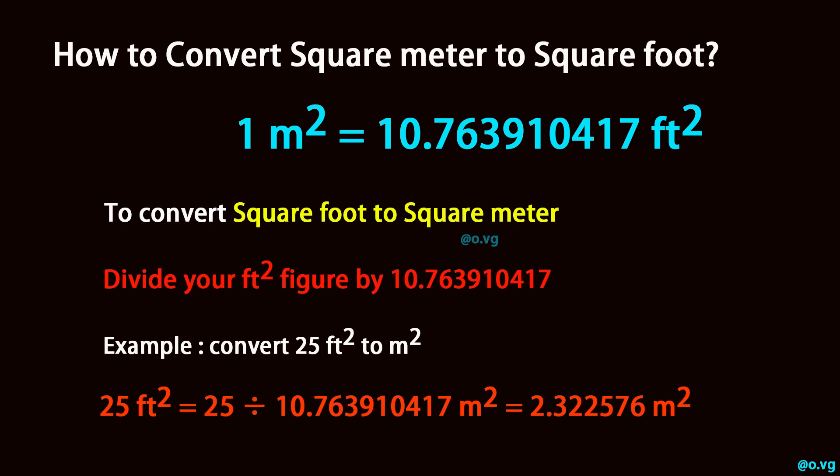Example: convert 25 square foot to square meter. 25 square foot equals 25 divided by 10.763910417, which equals 2.322576 square meter.